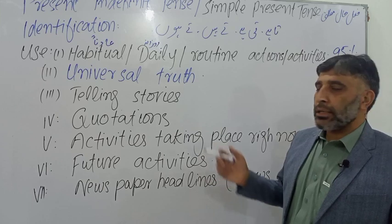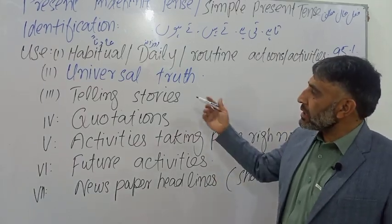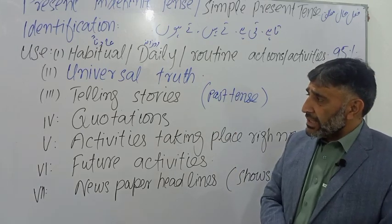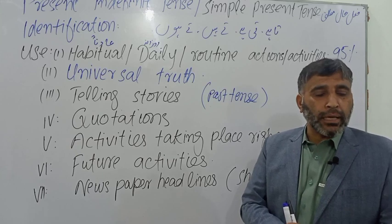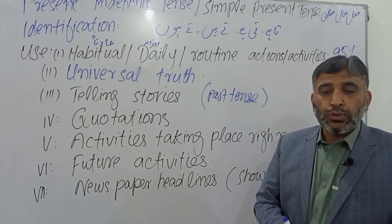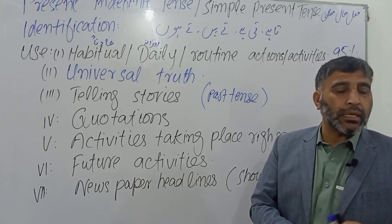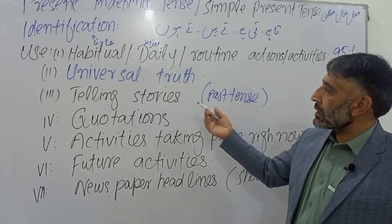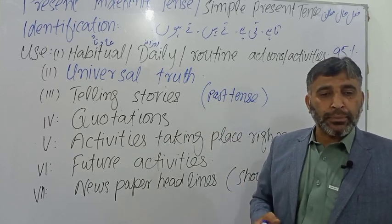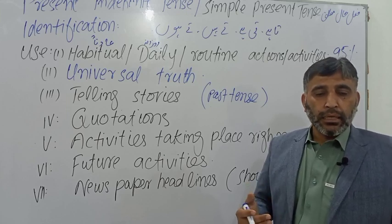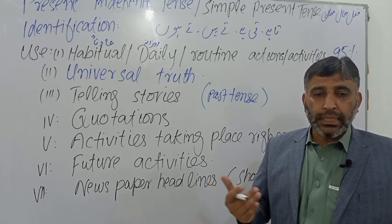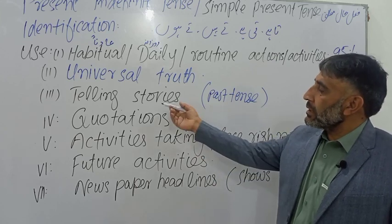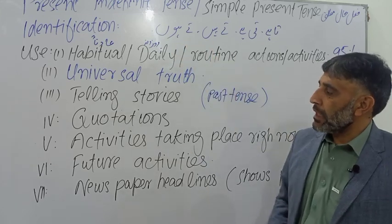The third use is for telling stories. Mostly for stories we use past tense, but sometimes the narration is in present independent tense as well. For example, instead of 'once upon a time there was a dog, he went here and there', the narrator may write: 'once upon a time there is a dog, he gets very hungry, he goes to a butcher shop, he finds a piece of meat, he runs away to eat it'.